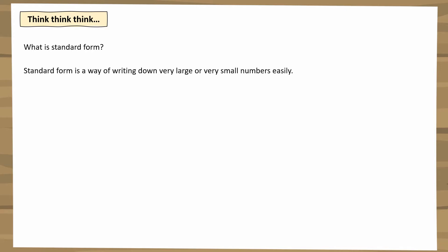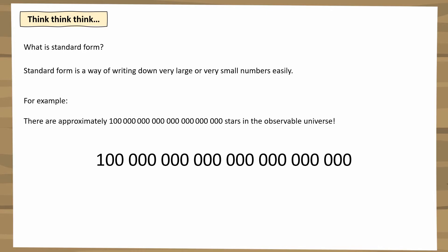First, let's think about what standard form is, what's the point of it, and why we need it. Standard form is just a way of writing down very large or very small numbers much more easily. For example, there are this many stars in the observable universe — that's an extremely large number, and it takes up a lot of space. We know place values like thousands, millions, and billions, but after that it gets really hard to remember them all, so we need a more efficient way of writing these numbers.